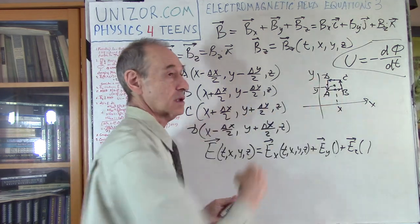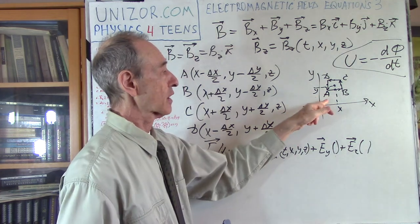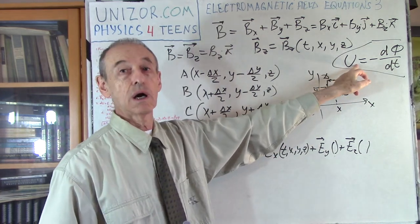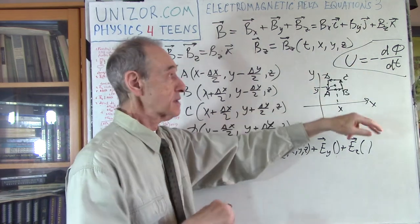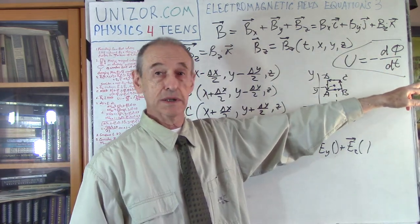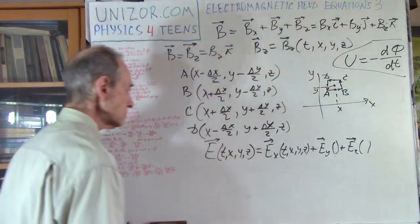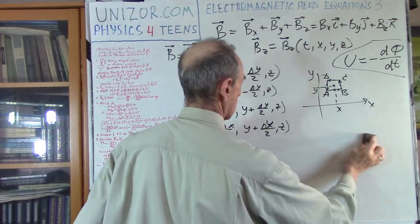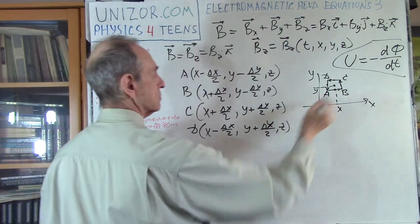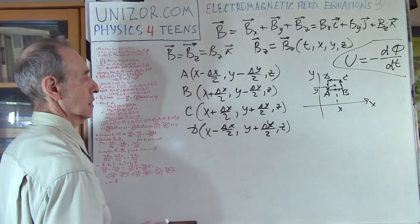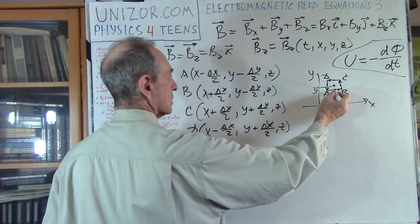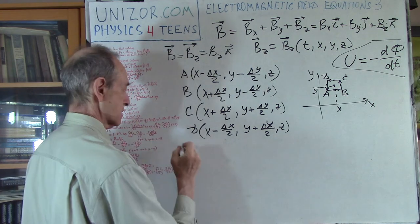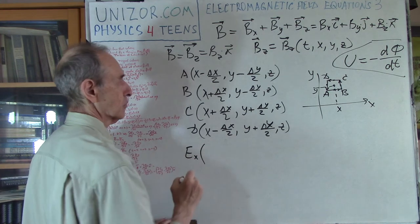I will go around this cycle and find how much work is needed to move from A to B, then B to C, etc. — that will be my total electromotive force, which on the other hand can be expressed in terms of magnetic field. From A to B, I take the middle-point electric field intensity Ex at (x, y − ΔY/2) and multiply by length ΔX.